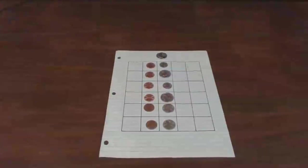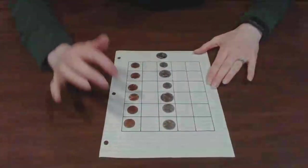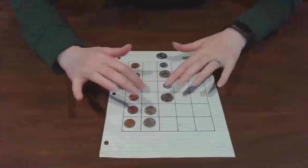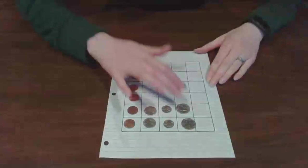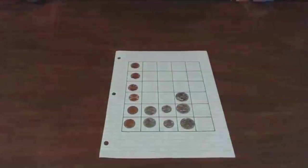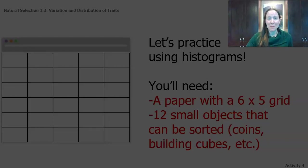To increase variation, I sort by value: pennies are one cent, nickels are five, dimes are ten, and quarters are twenty-five cents. I can increase the amount of variation shown based on the trait I select. Keep using your materials and try making different histograms showing different amounts of variation. We'll use histograms a lot as we look at what happens to our populations and how they change over time.